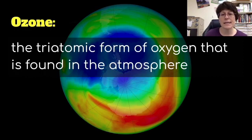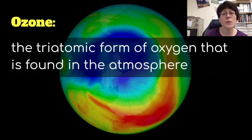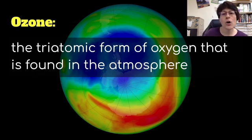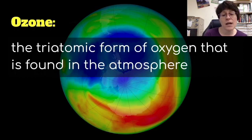Ozone in the ozone layer is beneficial, but on the ground it is not. In fact, it is a pollutant found in smog, because it causes breathing problems for people who have asthma and other breathing difficulties. You may see news alerts that ozone is high, and that people with breathing difficulties should stay indoors and not overexert themselves. So when it's on the ground, it is a pollutant.